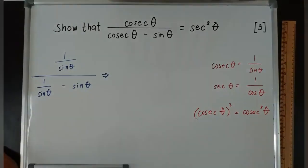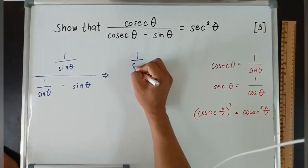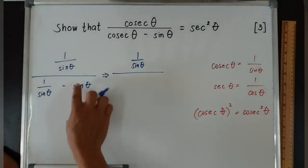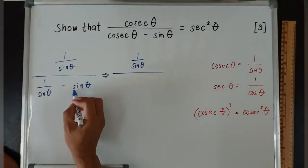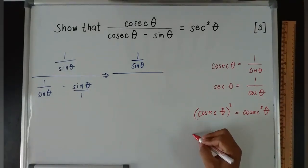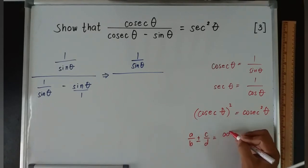This is equivalent to sec² θ. I have to come up with sec² θ. This will now be 1/sin θ over... you notice that this is a fraction, this will become over one. Remember, there is a rule that says a/b ± c/d = (a×d ± b×c)/(b×d).